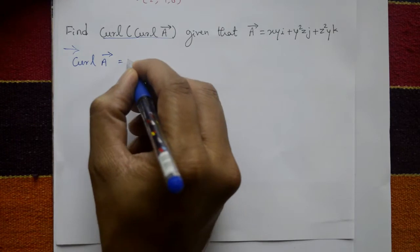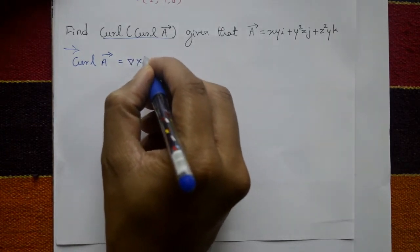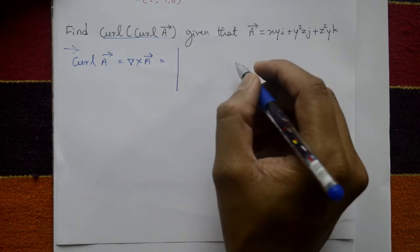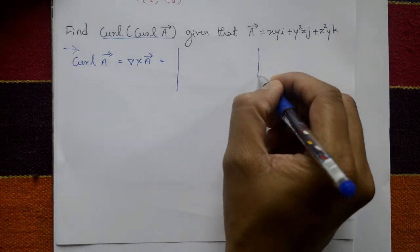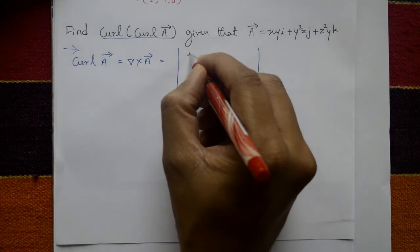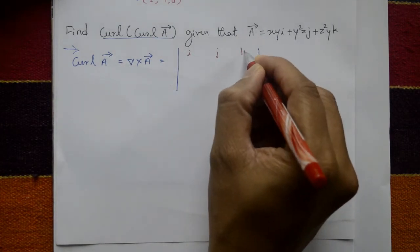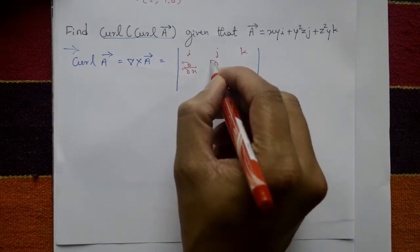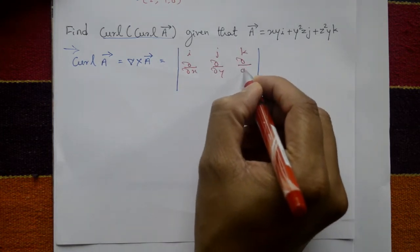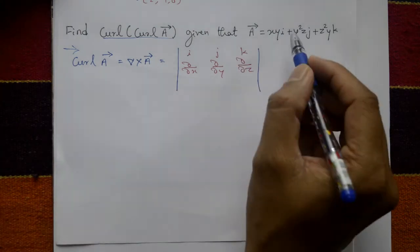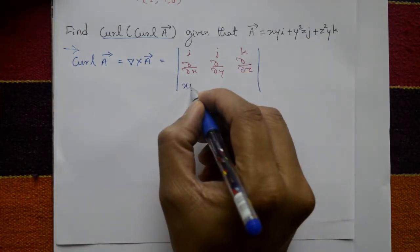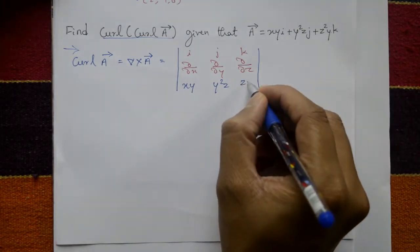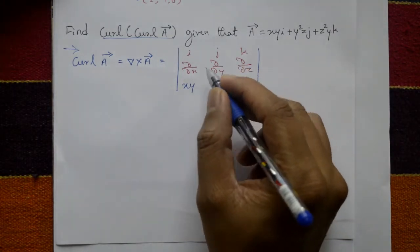Curl A means del cross vector A. Del means determinant. The determinant is i j k, del is ∂/∂x ∂/∂y ∂/∂z, and the vector A components are xy, y squared z, and z squared y. Now expand this one.